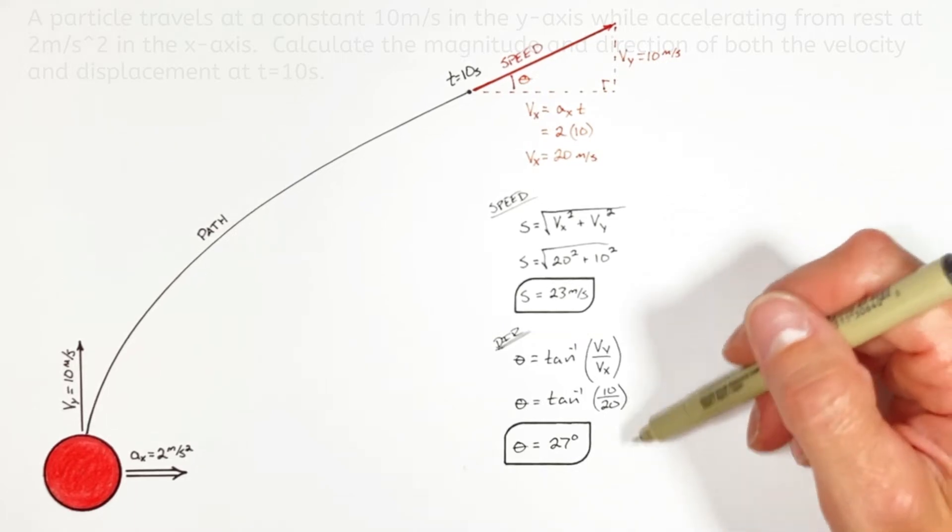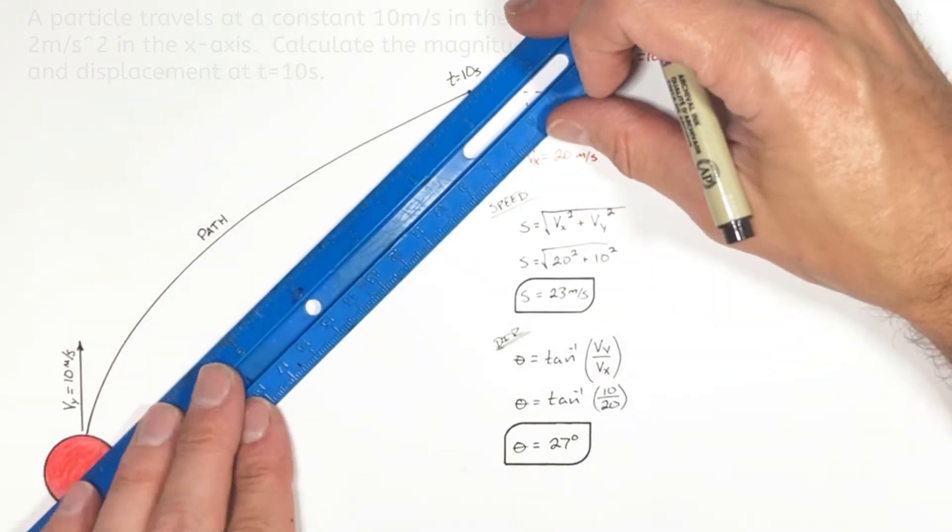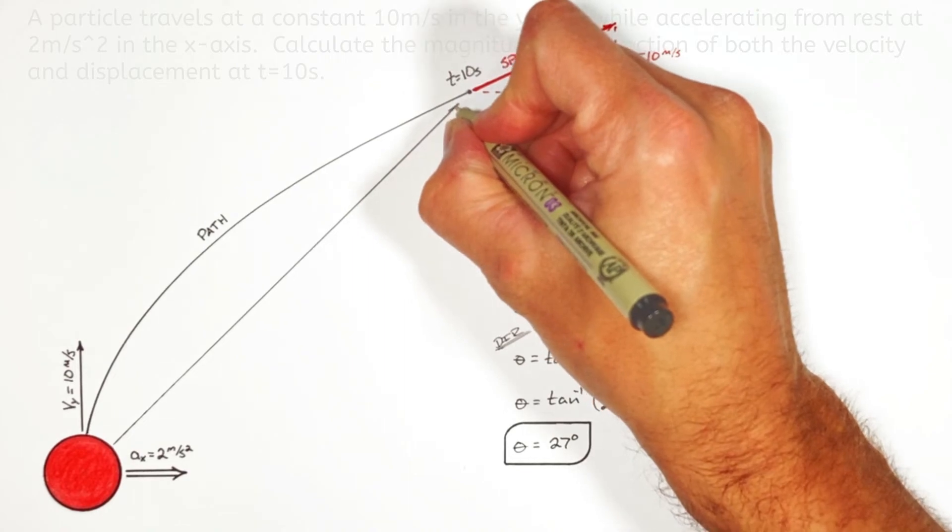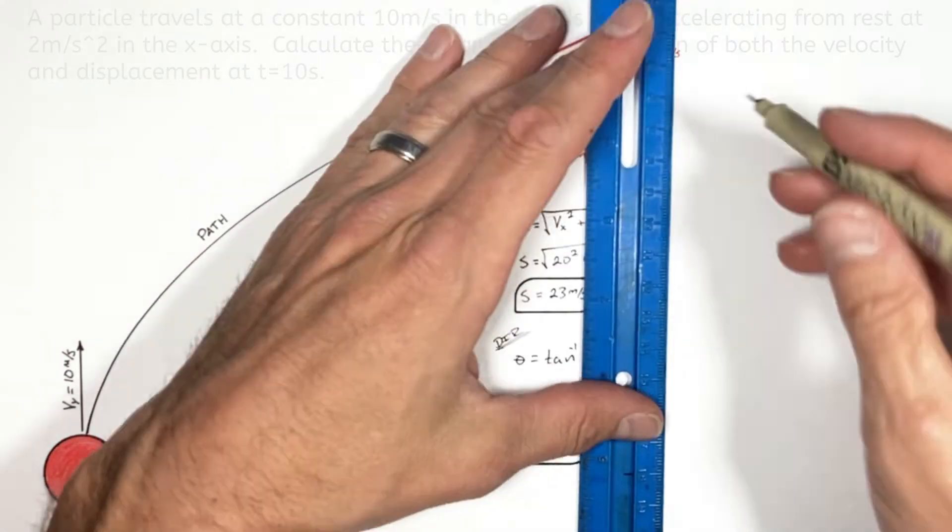Now I've shown you how to solve for the speed and direction of this ball but I want to take a look at displacement to show you why some of the shortcuts people take in this problem will cause you to get the problem wrong.